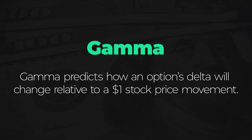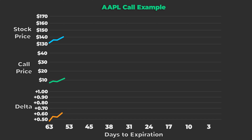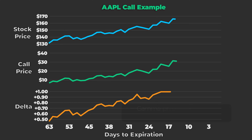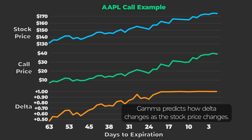Gamma is the option Greek that estimates how an option's Delta will change given a $1 shift in the stock price. So as Delta predicts how the option's price will change given a $1 shift in the stock price, Gamma predicts how the option's Delta will change when that stock price movement occurs. In the Apple example, you'll see the call's Delta rising alongside the stock price — Gamma predicts this rate of change.